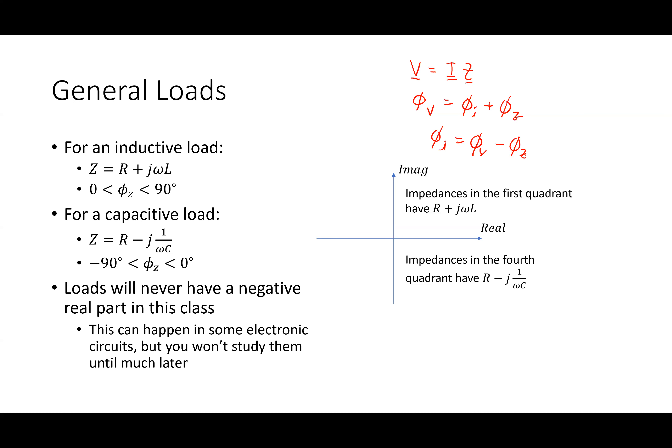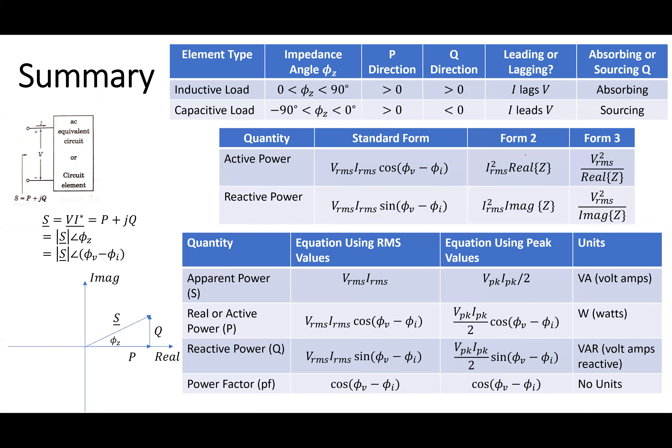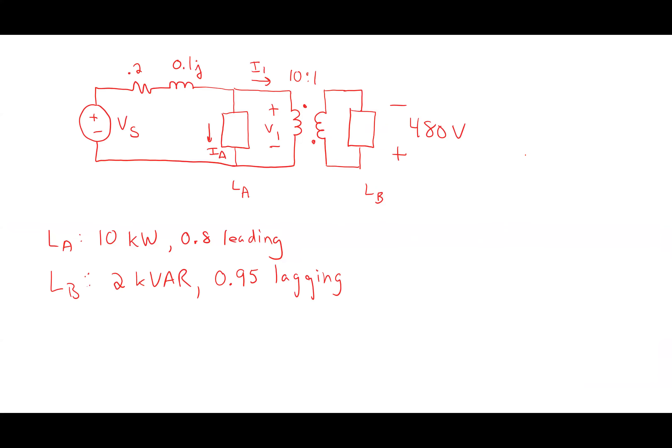If I have a capacitive load, I'm in the fourth quadrant, so the impedance angle is negative, and the current will be leading — its angle is more positive than the voltage angle. To summarize: for an inductive load, I lags V; for a capacitive load, I leads V.